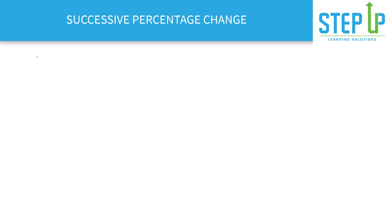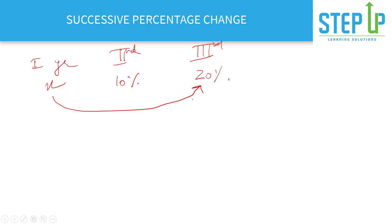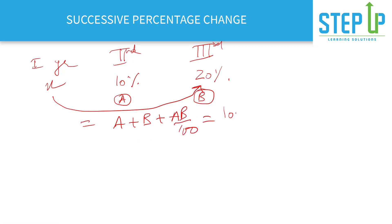Now let's move on to successive percentage change. Let's say you join college and in first year you got X marks. In second year you got a 10% increase, and in third year there's a 20% increase. The formula for the resultant change when two successive changes a and b occur is: a + b + (a×b)/100. So this becomes 10 + 20 + (10×20)/100 = 30 + 2 = 32%.